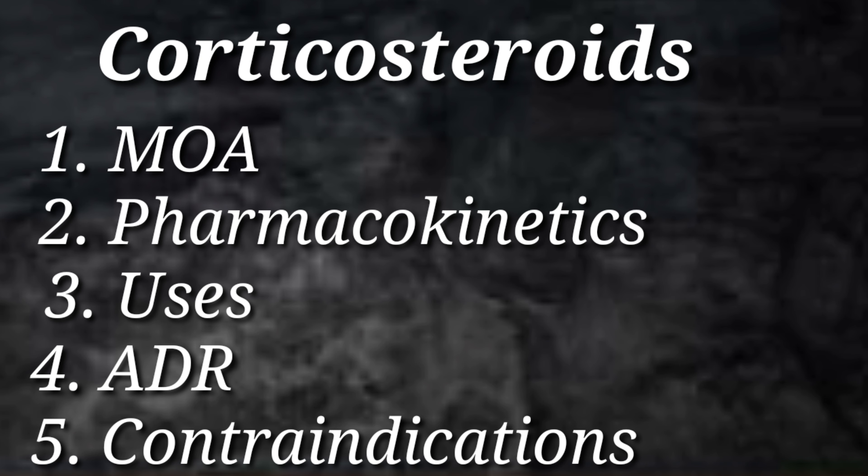Hello friends, welcome to our channel Pharmacy Pitara. As we have seen in our previous video on anti-asthmatic drugs part 7 about the third type — mast cell stabilizers — now we will learn the fourth type of anti-asthmatic drugs: corticosteroids. We will cover mechanism of action, pharmacokinetics, uses, adverse drug reactions, and contraindications in this video.